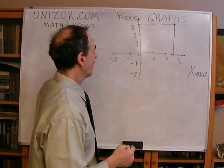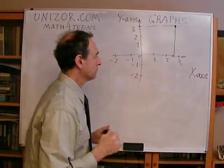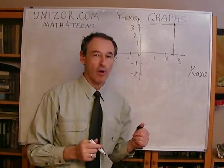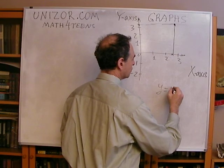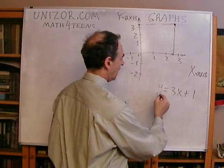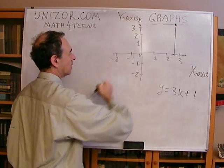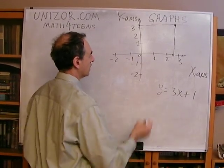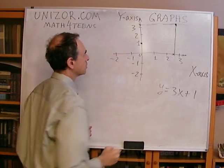So every point on the plane represents a pair of argument and function value. Now, if I have a function with all real numbers as its domain — let's say the function can be expressed as y = 3x + 1 — then for every point in the domain I can put a corresponding point on the plane. For example, if x = 0, then y = 1, which means the argument is 0 and the function value is 1. This point has coordinates (0, 1).